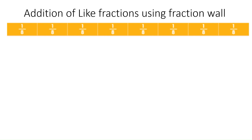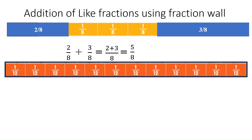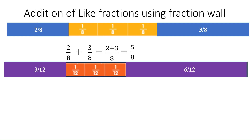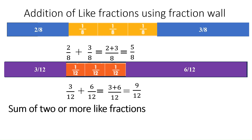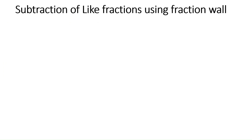Next is addition of like fractions using the fraction wall. Take 1 strip of 1/8, shading 2 parts on the left and 3 parts on the right. Adding 2/8 + 3/8: 2 parts plus 3 parts is 5 parts, so the answer is 5/8. Take a 1/12 strip: 3 parts on the left and 6 parts on the right. Adding 3/12 + 6/12 gives 9 parts, so 9/12. The sum of two or more like fractions equals the sum of the numerators over the common denominator.